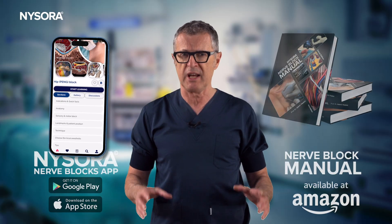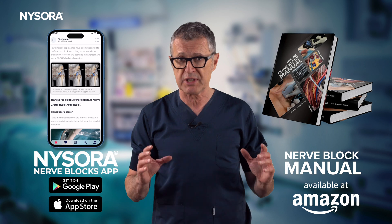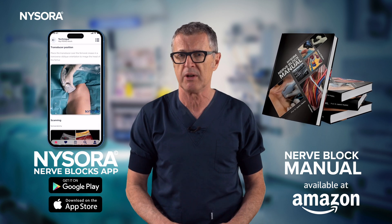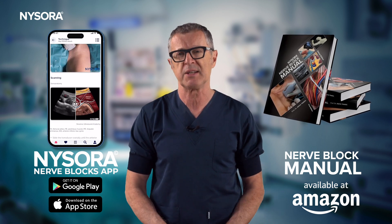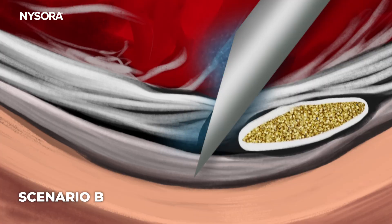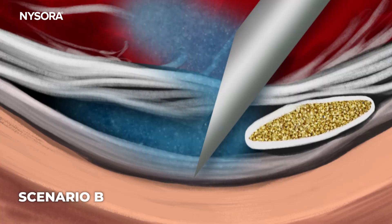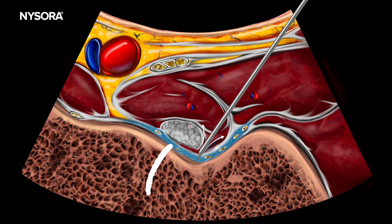To overcome this, a very slight needle withdrawal — typically about one or two millimeters — is necessary. This adjustment leads us to Scenario B, where the local anesthetic may partially spread underneath the fascia of the iliacus muscle and partially into the lower portion of the iliacus muscle itself.